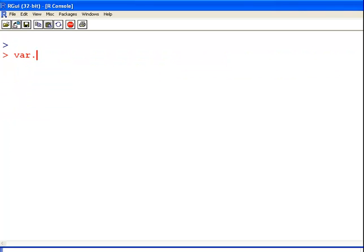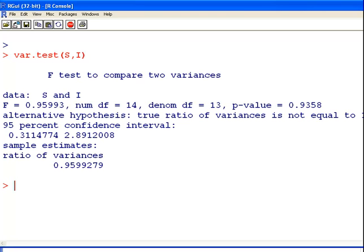Now the procedure is var.test with Scotland and Ireland. Let's run the procedure now. Simply type in the name of the two data sets. And there we go. F-test to compare two variances.